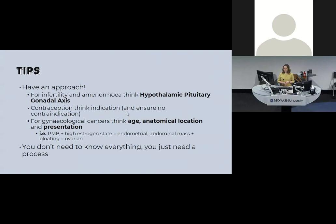In general, your approach to these topics is to know your HPG axis from top to bottom for infertility and amenorrhea, because it's the exact same approach for both. For contraception, think about your indication, why someone might need it, what their personal preferences are, and make sure there are no contraindications. For gynae cancers, just think age, menopausal state, where they're having symptoms and how it's presenting. You just need a process — you don't need to know everything to pass.